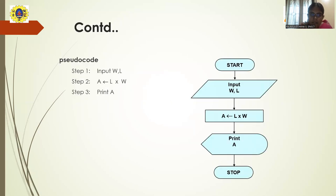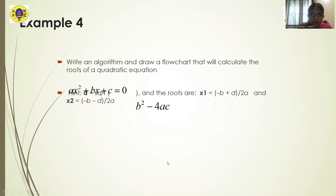The flowchart for calculating the area of a rectangle starts with Start and ends with Stop. A parallelogram is used to receive the inputs: length L and width W. In the rectangle process box, we perform the operation: area equals length multiplied by width. Finally, the parallelogram (output box) prints the result.